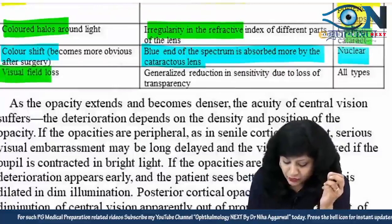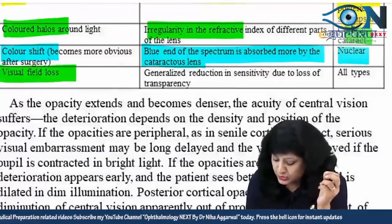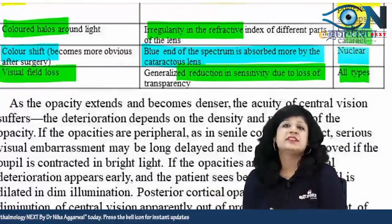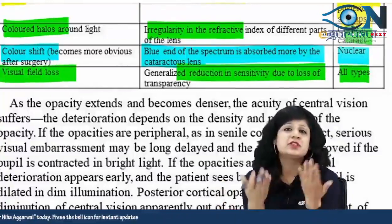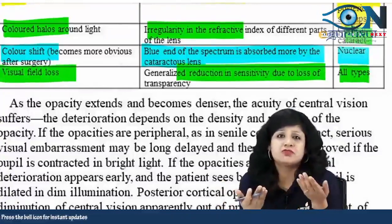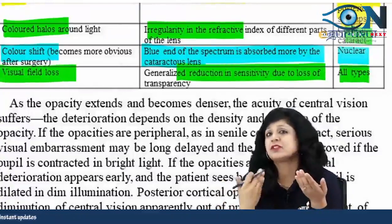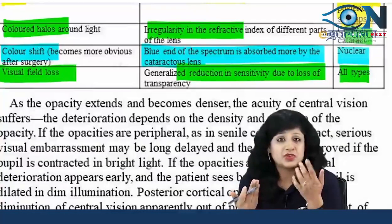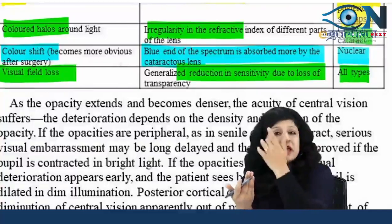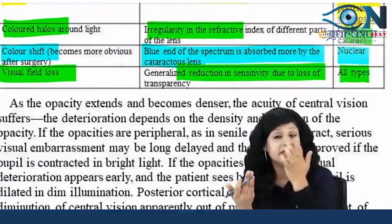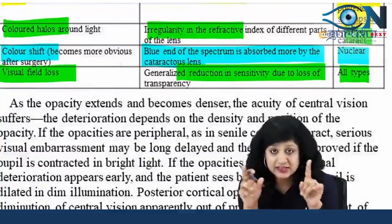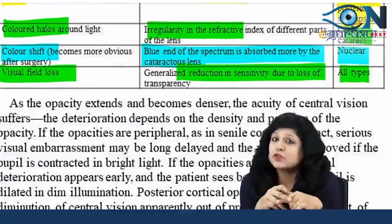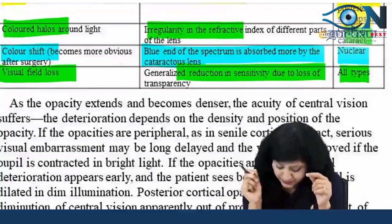Finally, there is visual field loss — a generalised reduction in sensitivity because of reduction in transparency and opacification in the lens, leading to decreased sensitivity in the periphery as well. This is found in all types of cataract.